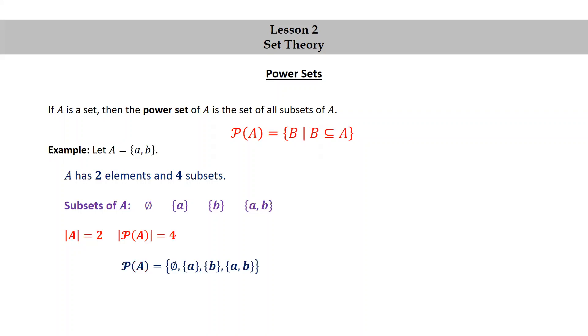The power set of A is the set consisting of the empty set, the set containing little a, the set containing little b, and the set itself consisting of little a and little b.